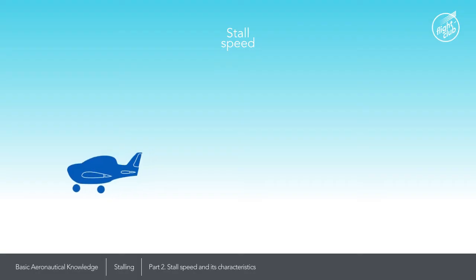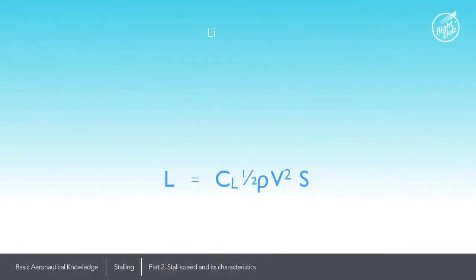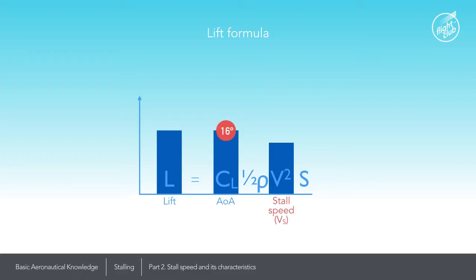We'll use the lift formula to explain this concept and identify what factors may increase or decrease the stall speed. The angle of attack is a component of the coefficient of lift. As the angle of attack increases, lift increases. At 16 degrees the aeroplane enters the stalled state, thus at this point the true airspeed becomes the stall speed.